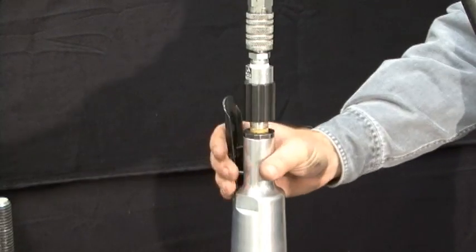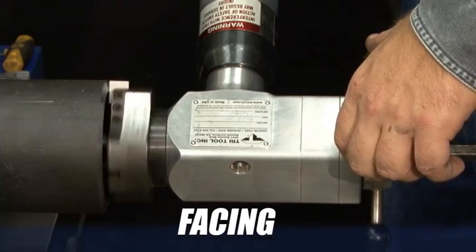The 204B comes standard with a variable speed pneumatic motor with an electric motor option.